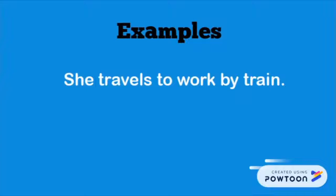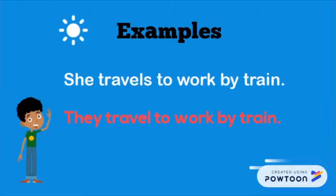Example. In the sentence 'she travels to work by train', we have a third person singular pronoun 'she' and the present tense verb ending '-s'. However, if we replace 'she' with a plural pronoun, then the verb form will change.